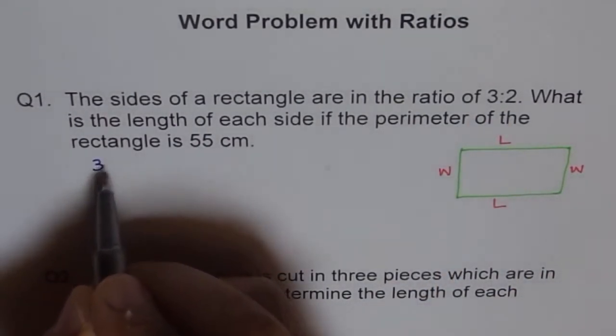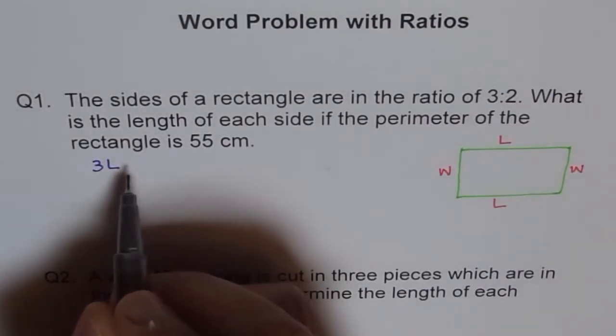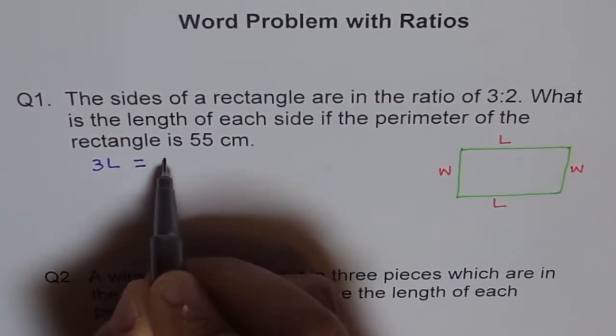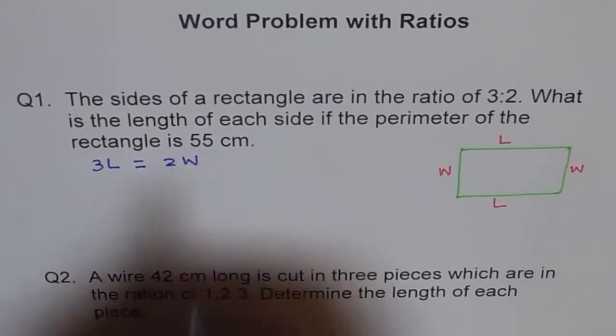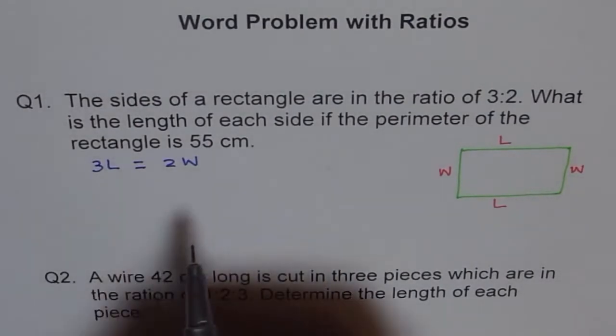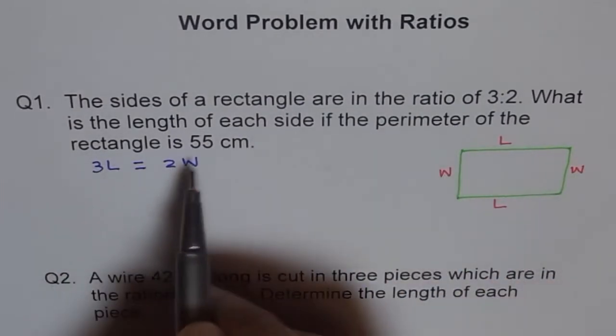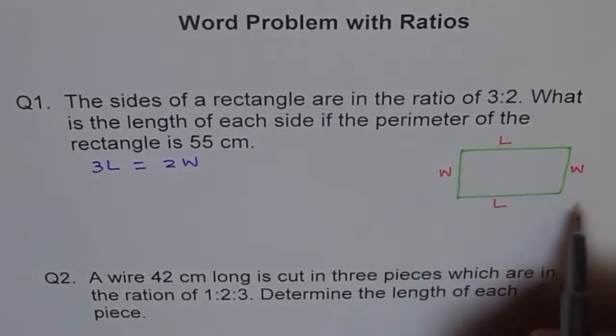Actually, 3 times length equals to 2 times width. And it says the perimeter of the rectangle is 55. Perimeter means sum of all the sides, right?